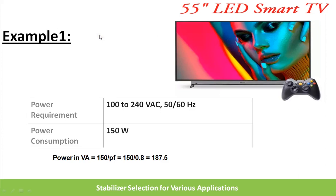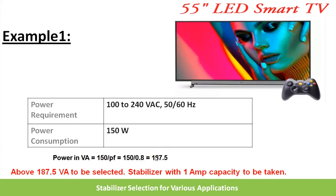Example 1: a TV with a power rating of 150 watts. Dividing by a power factor of 0.8 gives 187.5 VA. Using the minimum stabilizer output voltage of 200V, the current comes to approximately 1 amp. So a 1-amp stabilizer is sufficient for this TV. If you want to connect additional devices like a home theater or set-top box, calculate the total wattage and select the stabilizer accordingly.